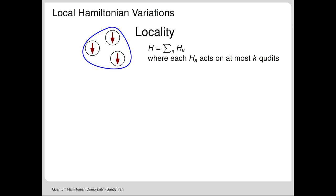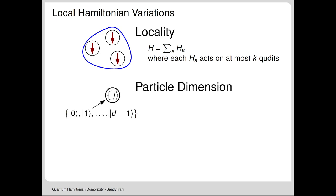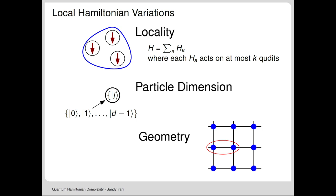There are different varieties of Hamiltonians you can consider. The version we proved last time was five-local—every term acts on five qubits. But you can consider different levels of locality: Hamiltonians that act on two or three qubits. You can also play with particle dimension, and you can enforce some geometry. This is starting to look more physical, because models studied in condensed matter physics typically have some geometric structure—particles on vertices of a grid with two-local terms on pairs connected by an edge.